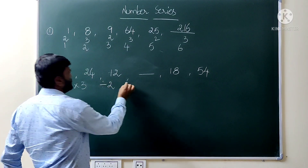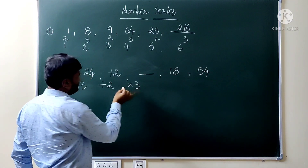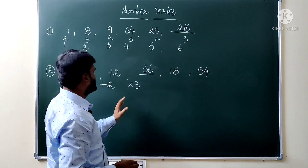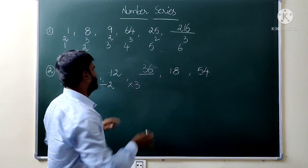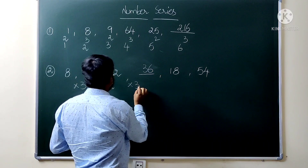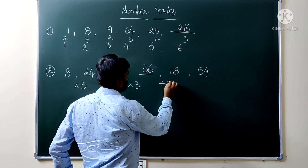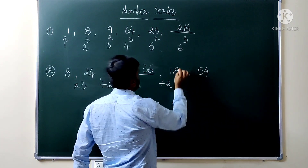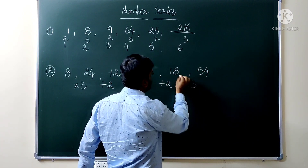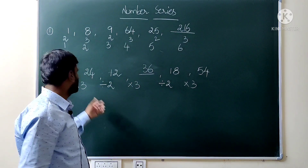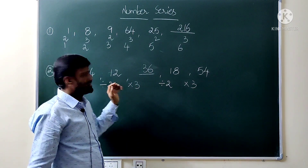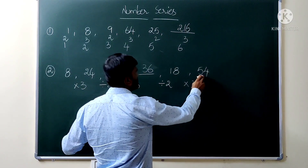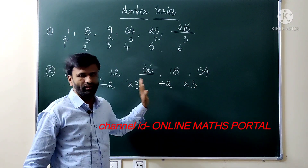So multiply by 3, divide by 2. Let me check: multiply by 3 gives 36. So 12 times 3 is 36. Then 36 divided by 2 is 18. Yes, that matches. Again, 18 times 3 is 54. So the logic applied: multiply by 3, divide by 2. The same logic continues from the first number to the last number. So the answer for the question mark is 36.